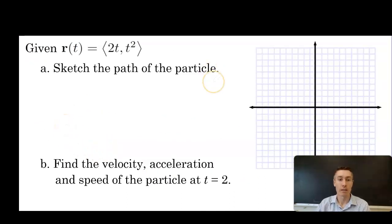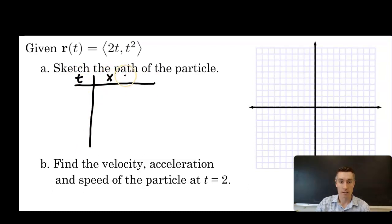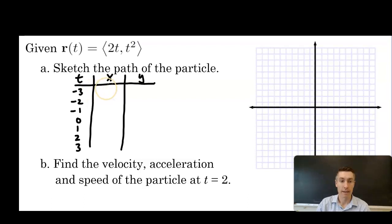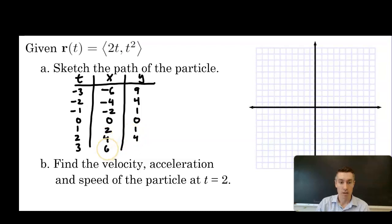Next, given r of t equaling ⟨2t, t squared⟩, sketch the path of the particle. We can make a table with t, x, y going from -3 to 3. At t = -3 the vector is ⟨-6, 9⟩, then ⟨-4, 4⟩, ⟨-2, 1⟩, ⟨0, 0⟩, ⟨2, 1⟩, ⟨4, 4⟩, ⟨6, 9⟩. These are all vector outputs but we plot them as points — the terminal point of each vector.